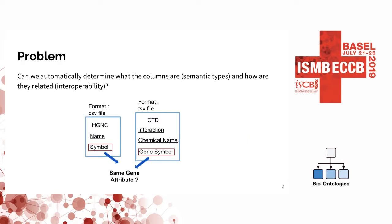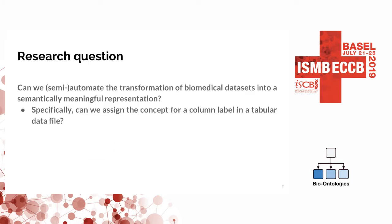However, this is not the only problem. These datasets can actually be in two separate formats, even CSV and TSV. And even if we look at their columns, we may have something like 'symbol' or 'gene symbol' columns that we are not actually sure represent the same gene attribute unless we manually look at it. So we were wondering if we can automatically determine what the columns are and how they are related. For our research question: can we semi-automate the transformation of biomedical datasets into semantically meaningful representations?